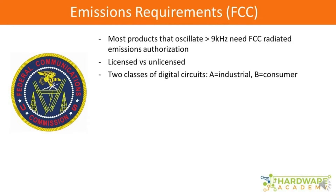Even for industrial products, most start off with the intention of trying to get Class B classification, because that gives them bragging rights that they have lower emissions. But if they don't meet those requirements, they will commonly fall back to just being considered a Class A device with higher allowable emissions.